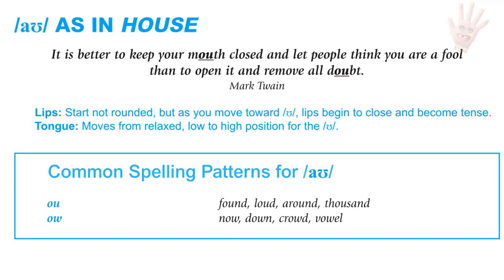OW as in house. For the OW sound, the lips are not rounded, but as you move toward the second part — the OO — the lips begin to close and become more tense. The tongue moves from a relaxed low position to a high position. Common spelling patterns: OU as in found, loud, around, thousand; and OW as in now, down, crowd, vowel.